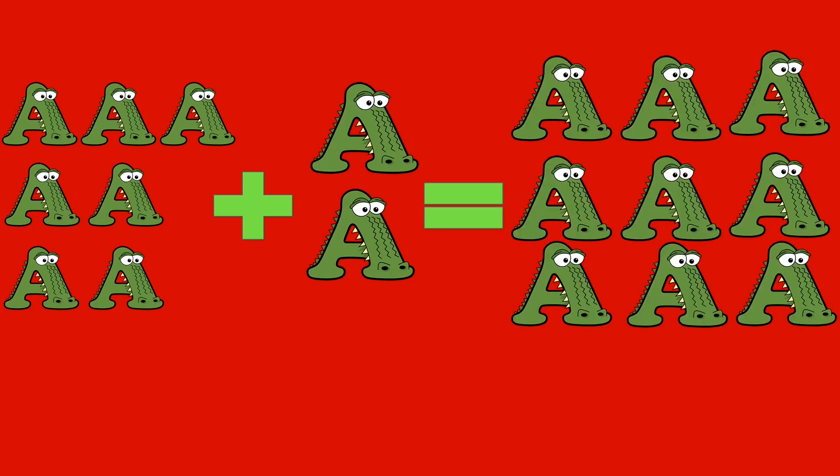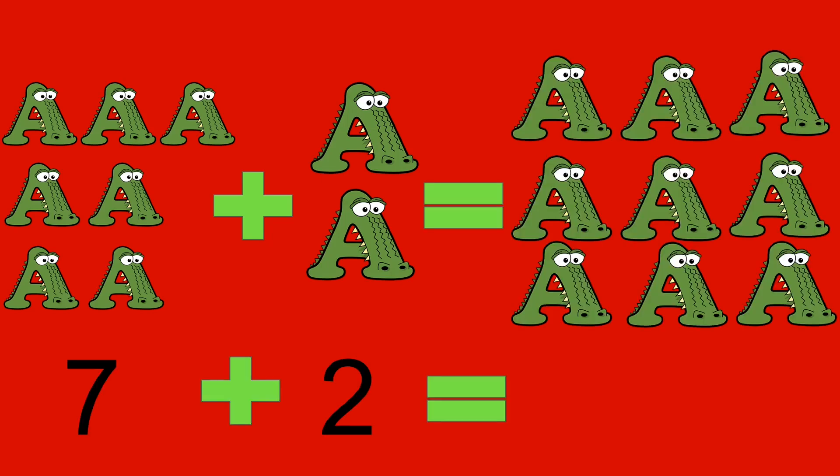7 alligators plus 2 alligators equals 9 alligators. 7 plus 2 equals 9.